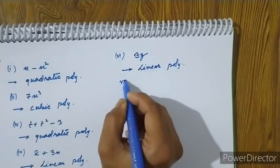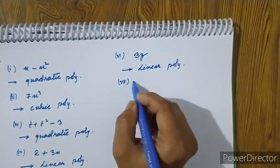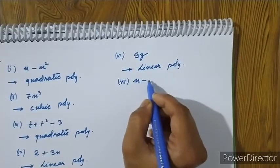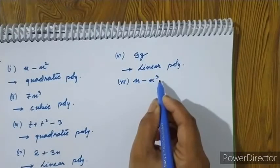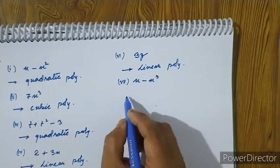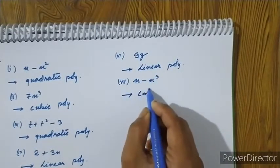Roman numeral 7: x minus x cubed. The degree is 3, so this is a cubic polynomial.